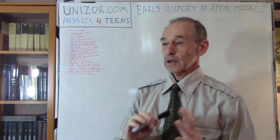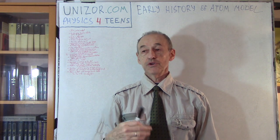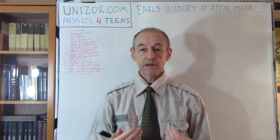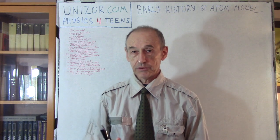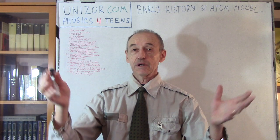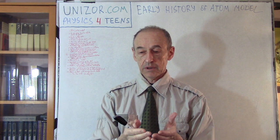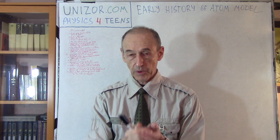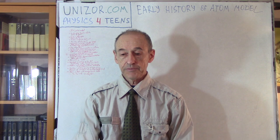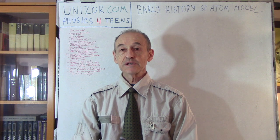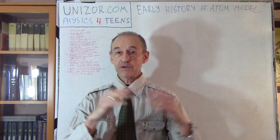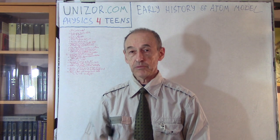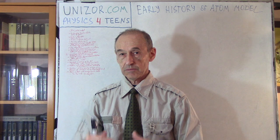Hundreds of thousands of molecules can be built using a relatively limited number of elements, and every element is basically an atom from which all these molecules are built. So we are going deeper and deeper: from matter as a whole, we bring it down to the minimum amount of that matter which still retains its properties — that's the molecule. Then we go deeper into the molecule and see it contains atoms of different elements.